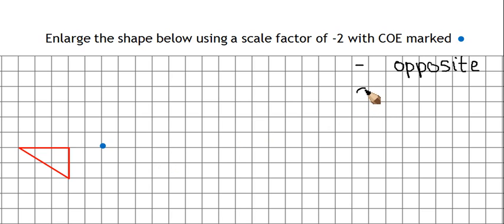We also know, in the first video we looked at, that a scale factor of 2 multiplies everything by 2. So this means that here we're going to be finding the opposite and then multiplying it by 2.